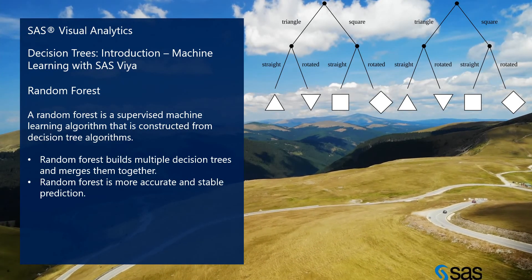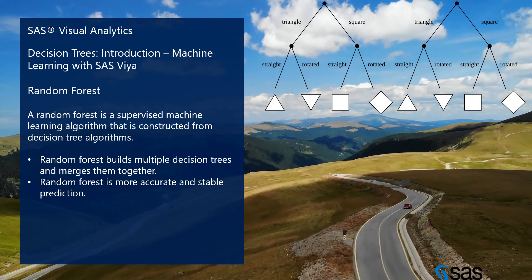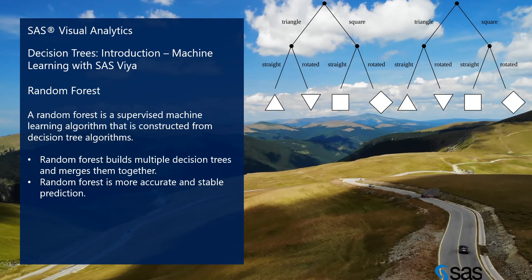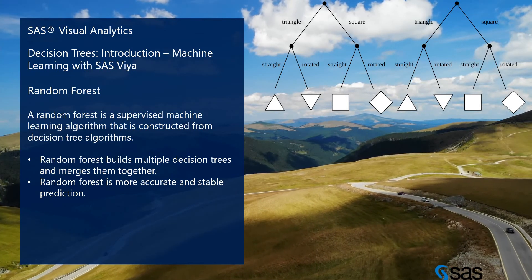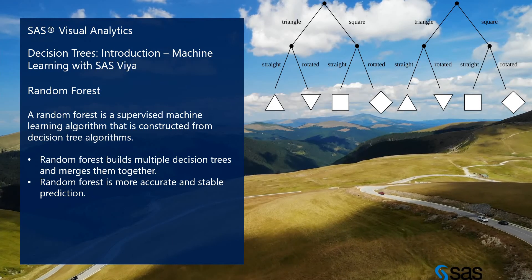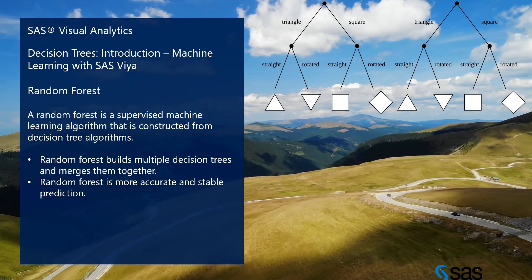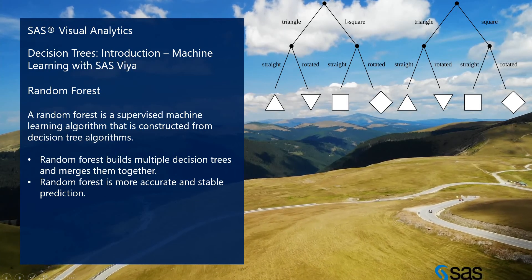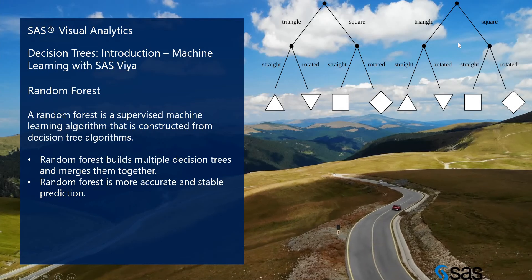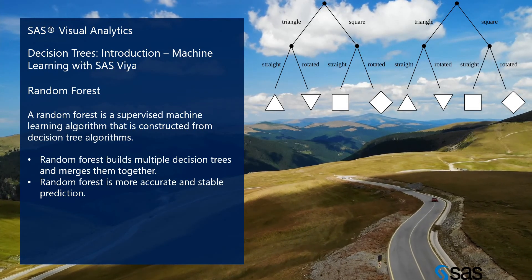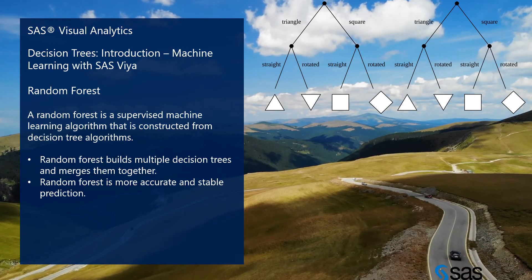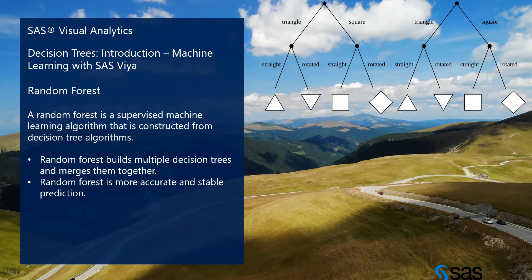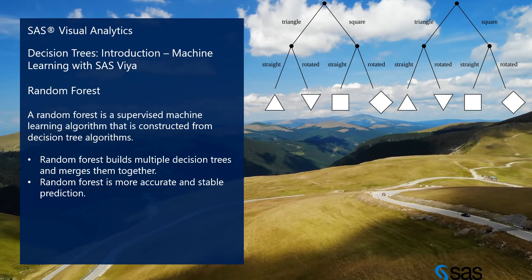Random forest is a supervised machine learning algorithm constructed from decision tree algorithms. Random forest builds multiple decision trees and merges them together, resulting in more accurate and stable predictions. It is a combination of multiple decision trees. For example, from one root node I create one decision tree, then another — those multiple decision trees help us make decisions more clearly and accurately.